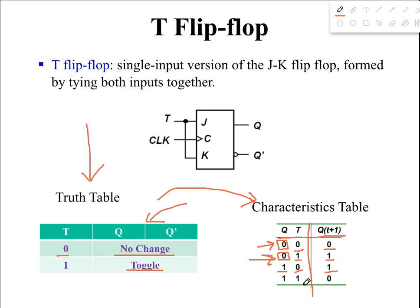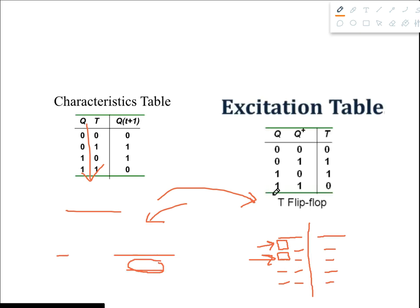For the last row, T equals 1 means toggle the value of the present state. Since the present state is 1, the next state would be 0. Remember, toggling means just complementing the value of the present state. This is how we derive the characteristic table with the help of the truth table.